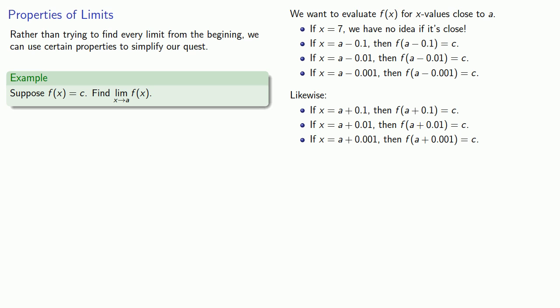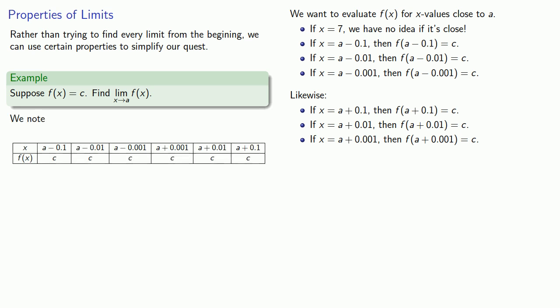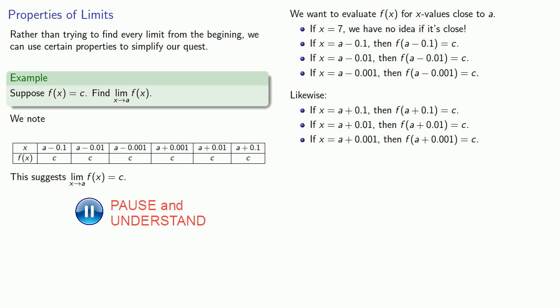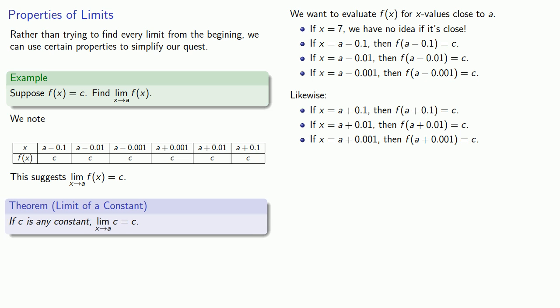Now we have a bunch of function values. We can round them to the same number of decimal places — it doesn't matter how many, they're all the same. This table suggests that as x gets close to a, the function value is going to get close to c. So our limit as x approaches a is c. This suggests a very useful property: the limit as x approaches a of the constant c is going to be the constant itself.